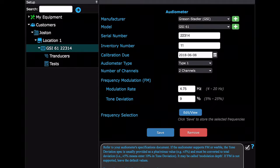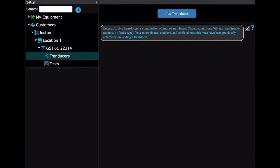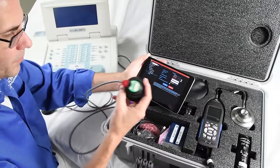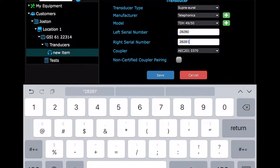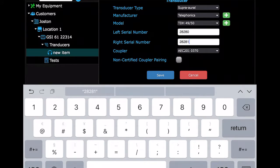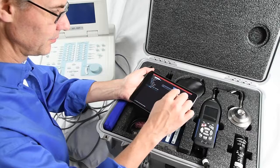To add a transducer, select Transducers in the tree view, then Add Transducer. OddCal can test many different transducers, but today we are only going to use the SuperAural headset. When it is added and saved, navigate to Tests in the tree view.